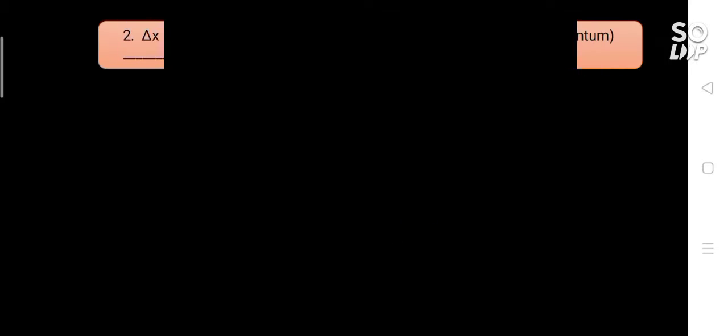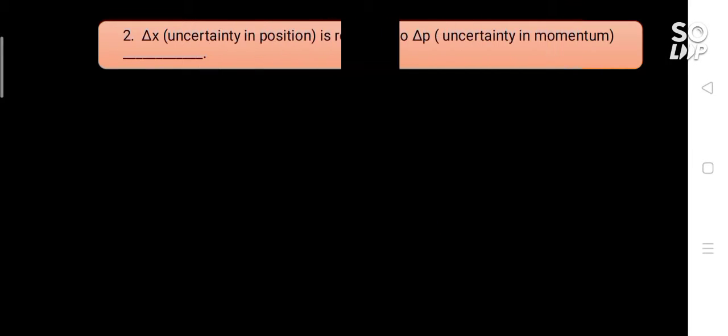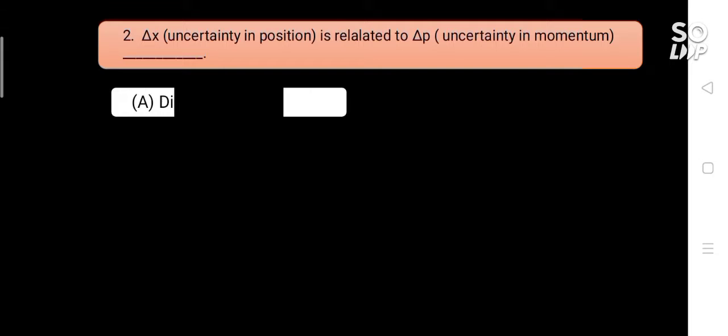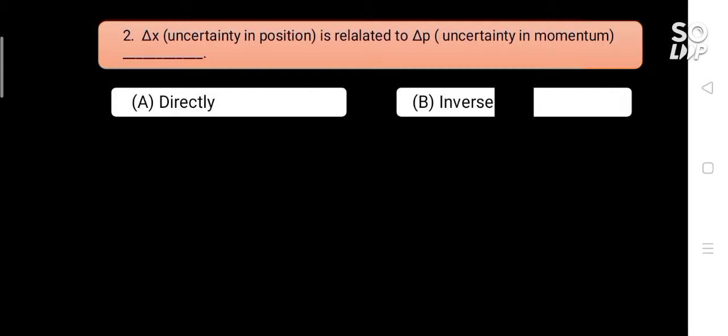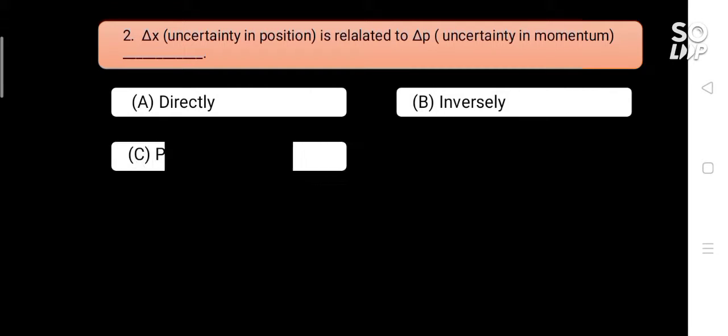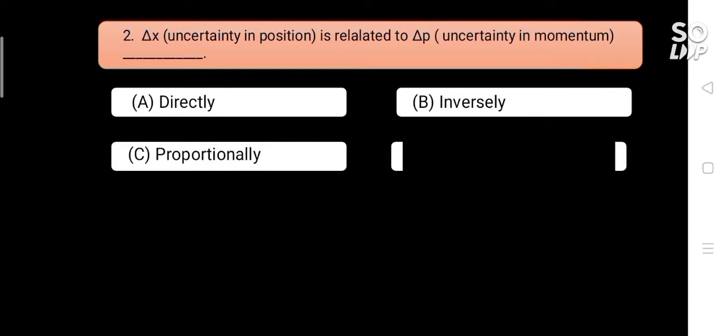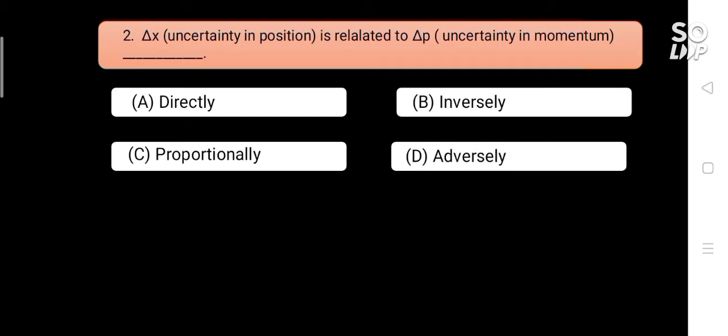Uncertainty in position (Δx) is related to uncertainty in momentum (Δp) — blank. Options are: A) directly, B) inversely, C) proportionally, D) adversely. Answer is B) inversely.